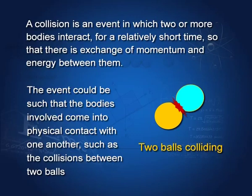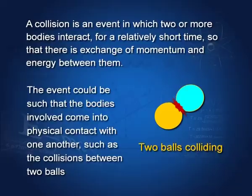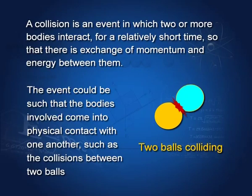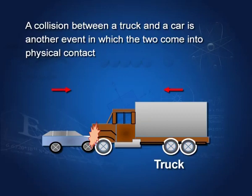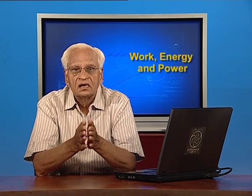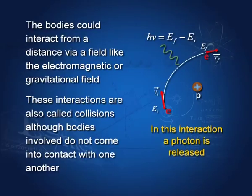The event could be such that the two bodies actually collide — they come and collide with one another — or they could interact at a distance. Two balls colliding such that they are touching one another, or a collision between a truck and a car, are examples of contact collisions. However, there are collisions like the collision between a proton and an electron in which the particles do not touch one another; they interact from a distance.